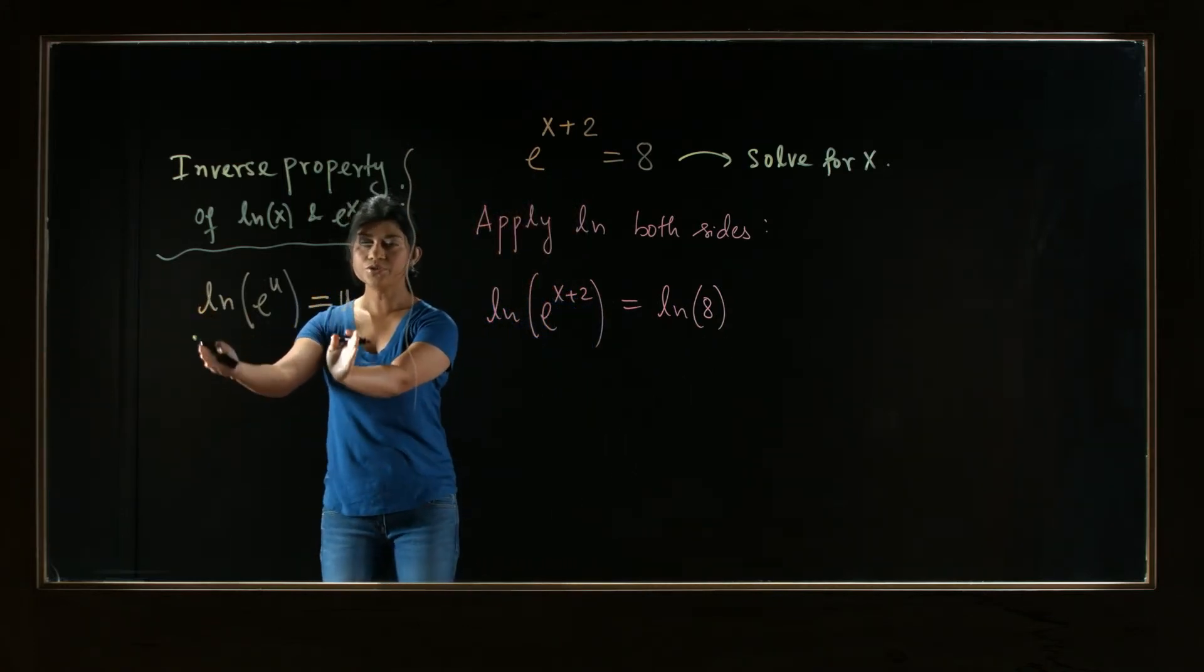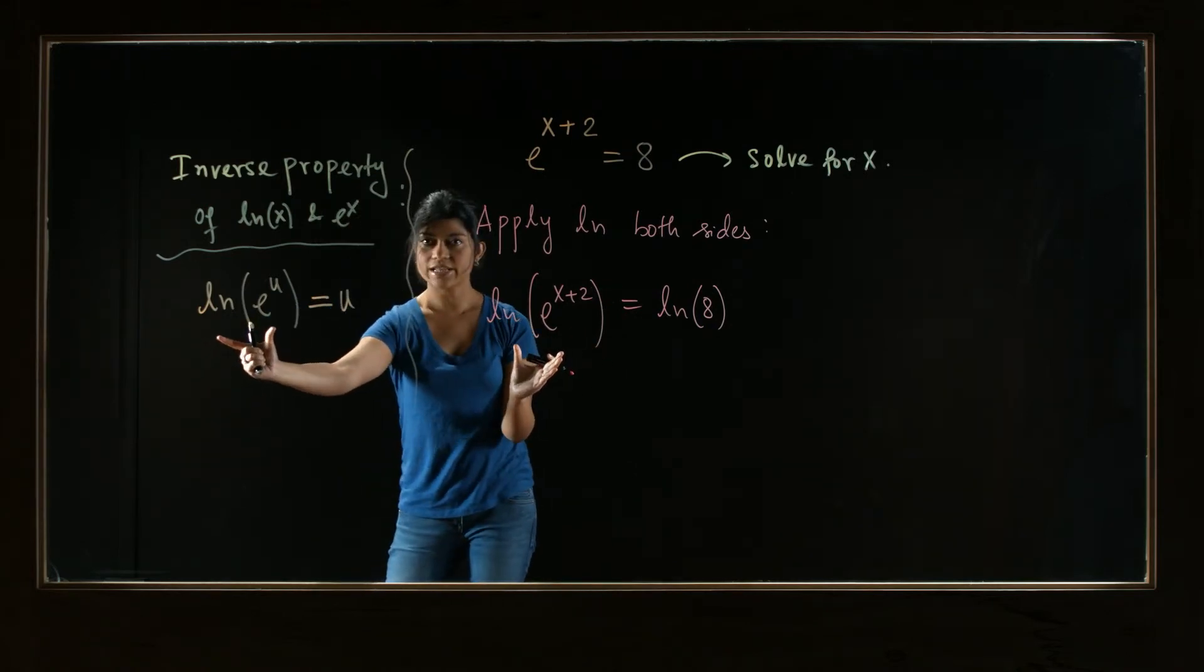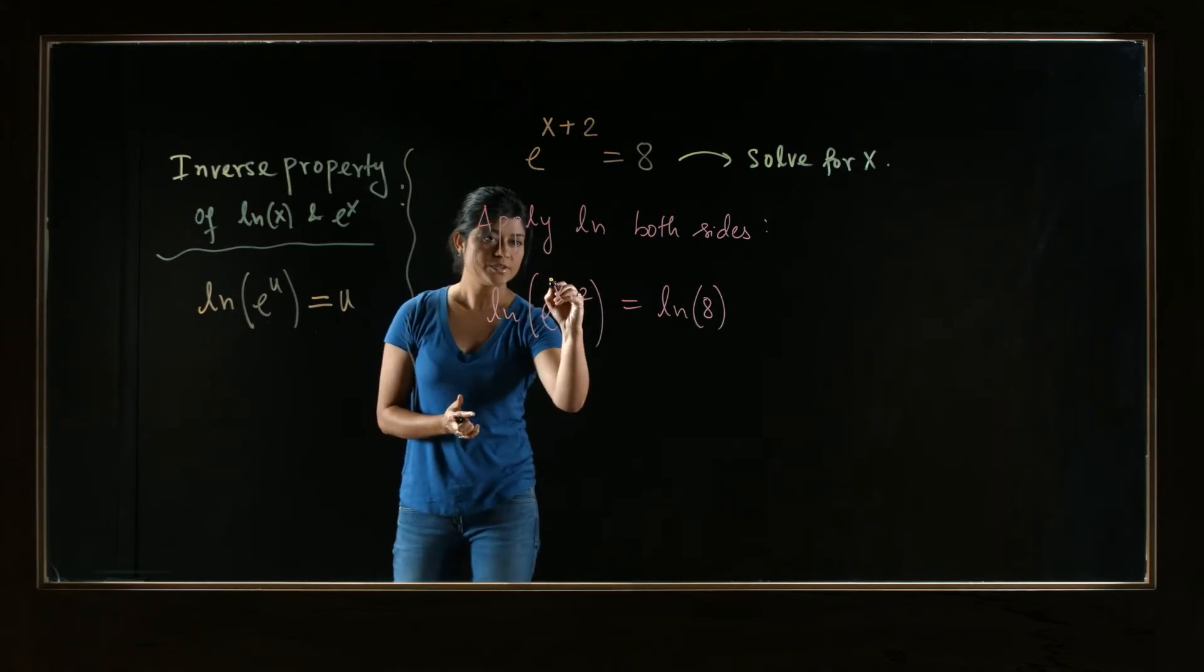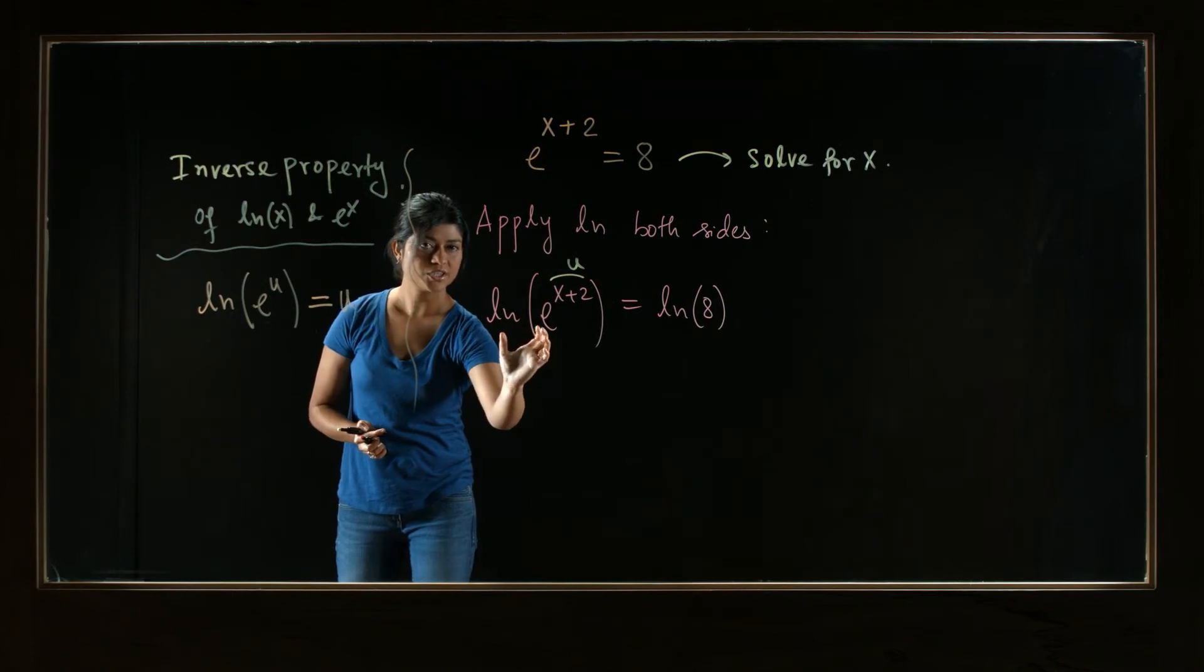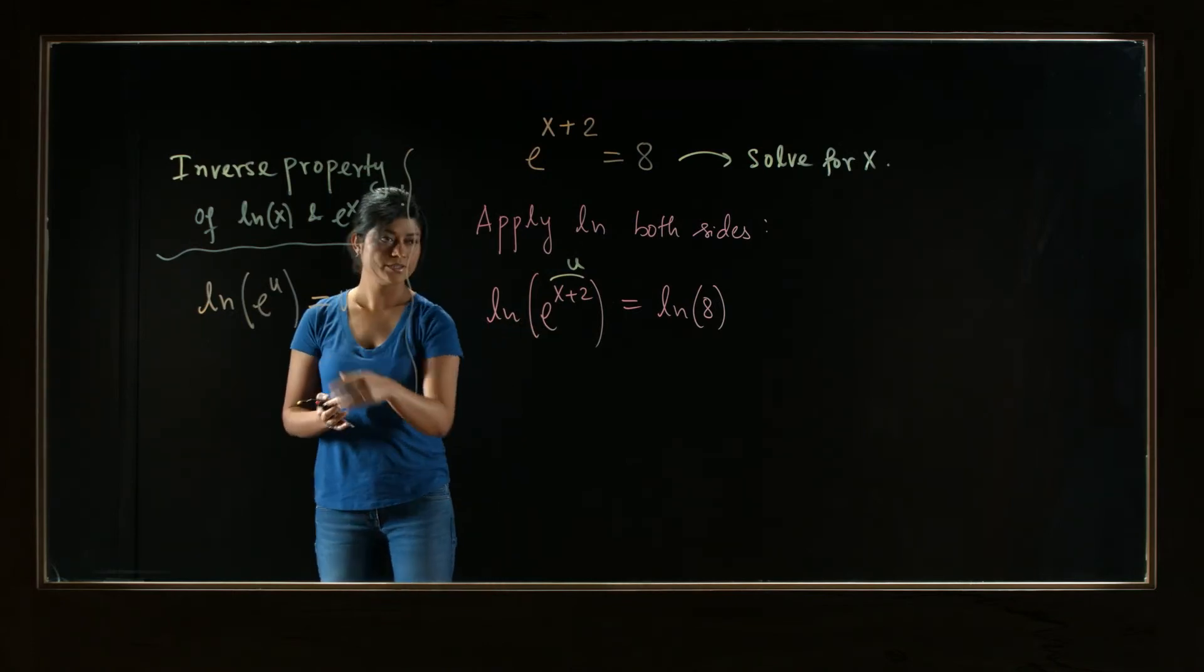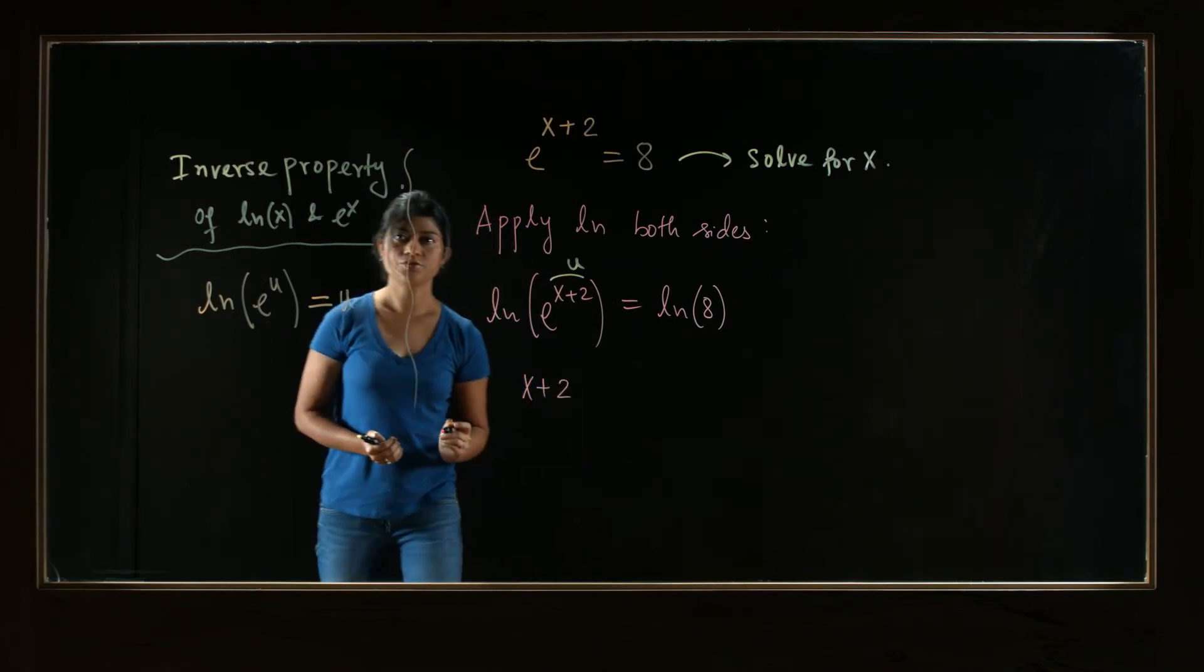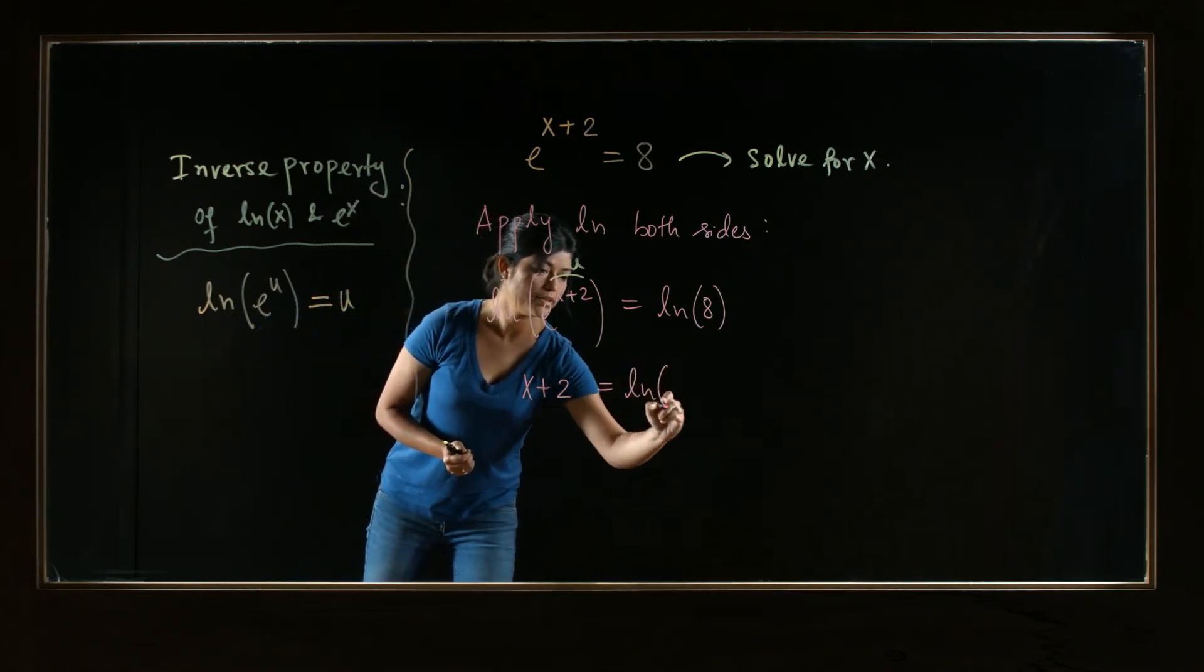Now we want to use this inverse property. And look, the left hand side of this equation looks just like the property right here, and this x plus 2 is our u. So as soon as ln and e are next to each other, they cancel, like in the property. And we will have just the x plus 2 to the left, and on the right hand side, we will still have ln of 8.